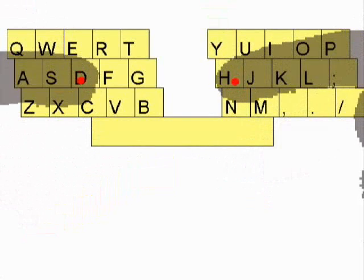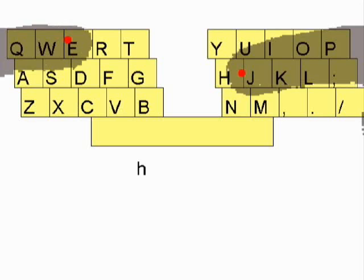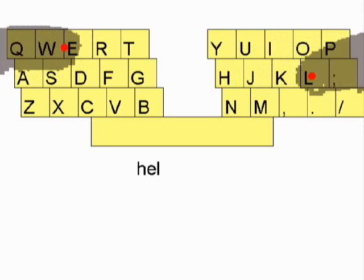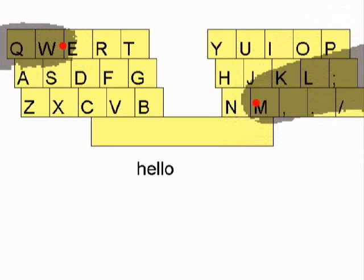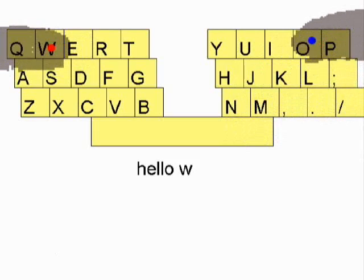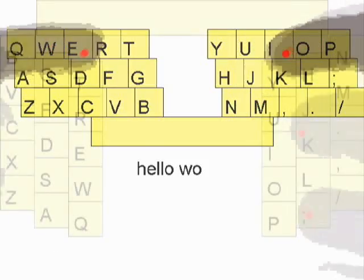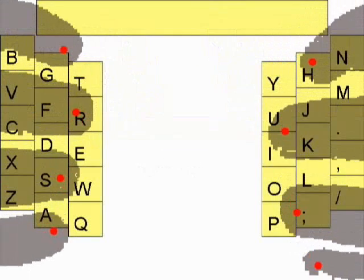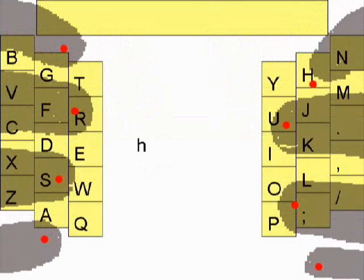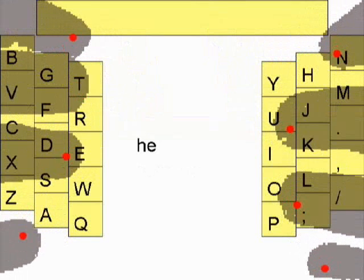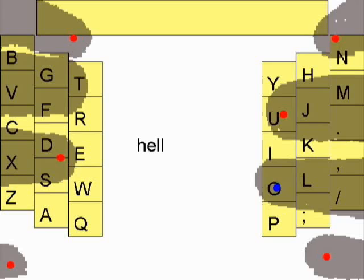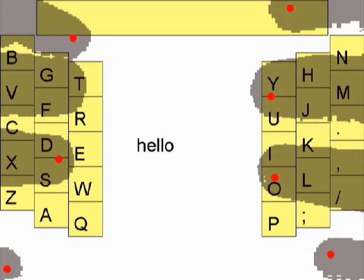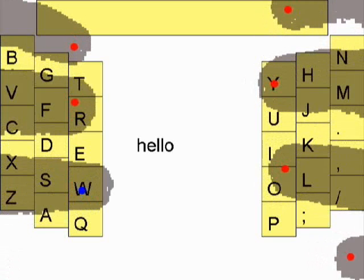Next, we examined text entry. A traditional soft keyboard can be used with two touch points. Because this does not leverage the other fingers, input is slow. To utilize additional fingers, we modified the keyboard so that the relative positions of the keys and fingers would be maintained for touch typists. This layout allows more fingers to reach the keys while leveraging previous learning.